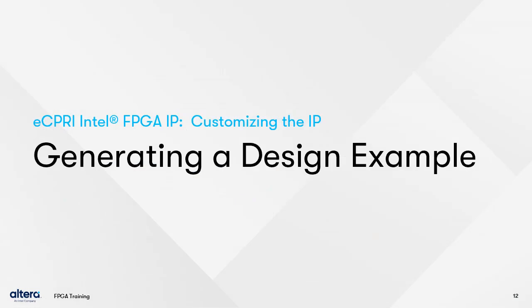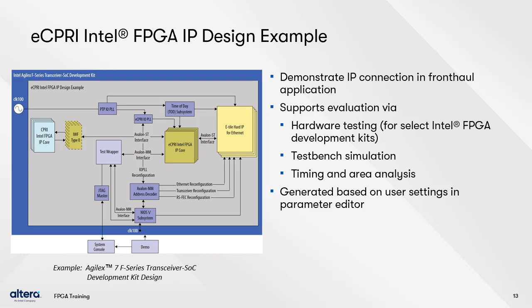Now, let's see how to create a design example. The eCPRI IP Parameter Editor can create a complete design example for you, using the very parameters that you set in the Editor window. It provides a great example of how the IP core can be connected in your own design. A block diagram of the design example, created when targeting an Agilex 7F Series device, is shown in the screen capture. The design example is fully functioning, comes with a test bench wrapper for simulation, files to target select Altera development kits, and allows you to research resource usage and performance.